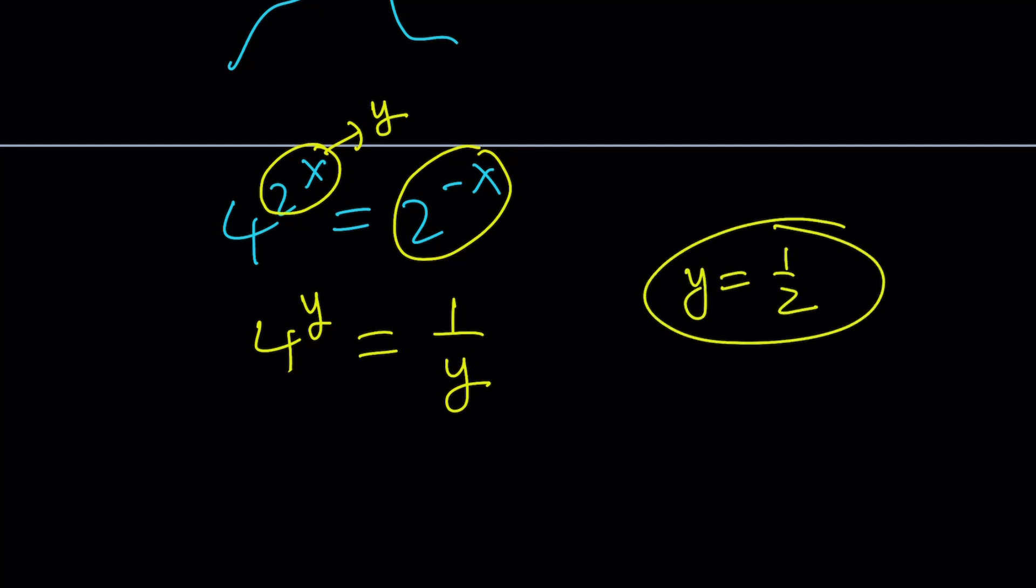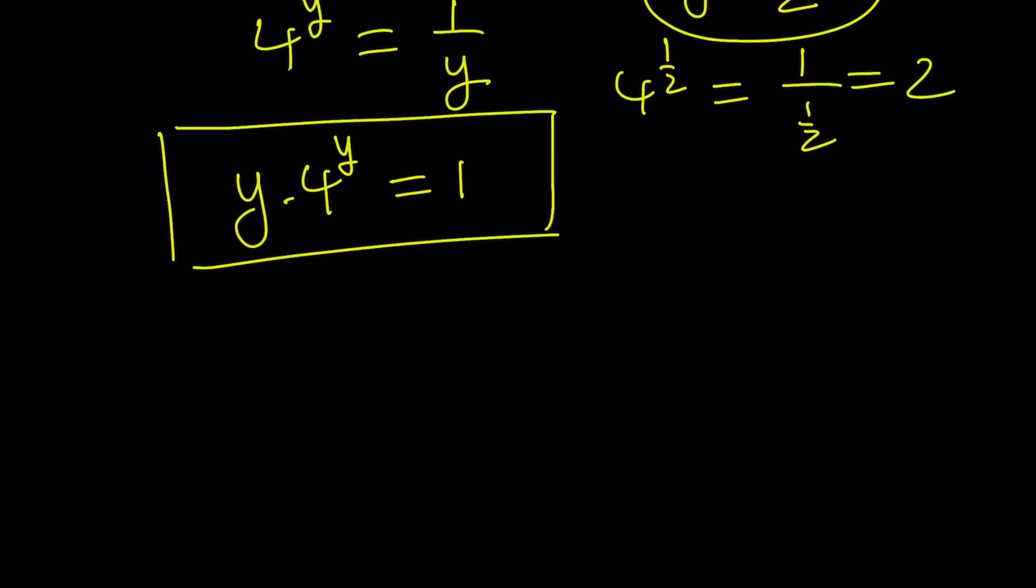And also, another thing that's really nice is you can go ahead and write this as y times 4 to the y equals 1 and then use the Lambert W function. Yes, I made a video, but I still can't remember that name. But anyways, yes, you can use that function to solve it that way too. Anyways, let me go ahead and show you the graph and we'll finish up.